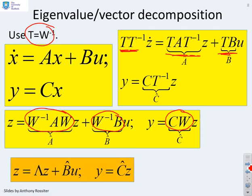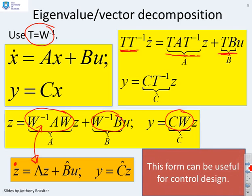Now, it can be shown, it's fairly straightforward, that this W inverse AW reduces to a diagonal matrix of the eigenvalues. So we've now got a state-space model in diagonal form. So z dot equals lambda z plus B hat u, y equals C hat z. Now we've separated the modes into the eigenvectors. And this form can be useful for control design.